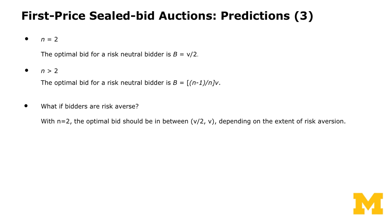When there are two bidders, the optimal bid for a risk-neutral bidder is half their value. With more than two bidders, you can set up the problem the same way and get an equilibrium bid of (n−1)/n times your value. So if n = 2, bid half your value; if n = 3, bid two-thirds; if n = 8, bid seven-eighths of your value. As there are more bidders, people will shade less, and bids get closer to their values. What if you are risk averse? With two bidders, the optimal bid for a risk-averse bidder would be somewhere between your risk-neutral bid v/2 and v, depending on the extent of your risk aversion.